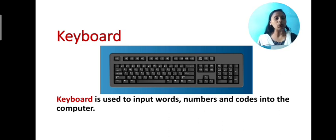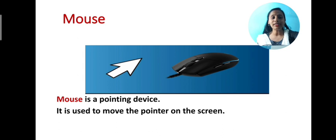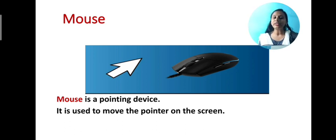Keyboard is used to input words, numbers and codes into the computer. The next one is mouse. Mouse is also known as an input device and it is a pointing device. It is used to move the pointer on the screen.